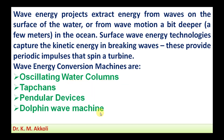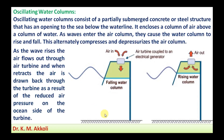The wave energy conversion machines include oscillating water columns, tapered channels, pendular devices, and duck-type machines. Oscillating water columns consist of a partially submerged concrete or steel structure that has an opening to the sea below the waterline. This encloses an air column above a water column. As a wave enters, it causes the water column to rise and fall.